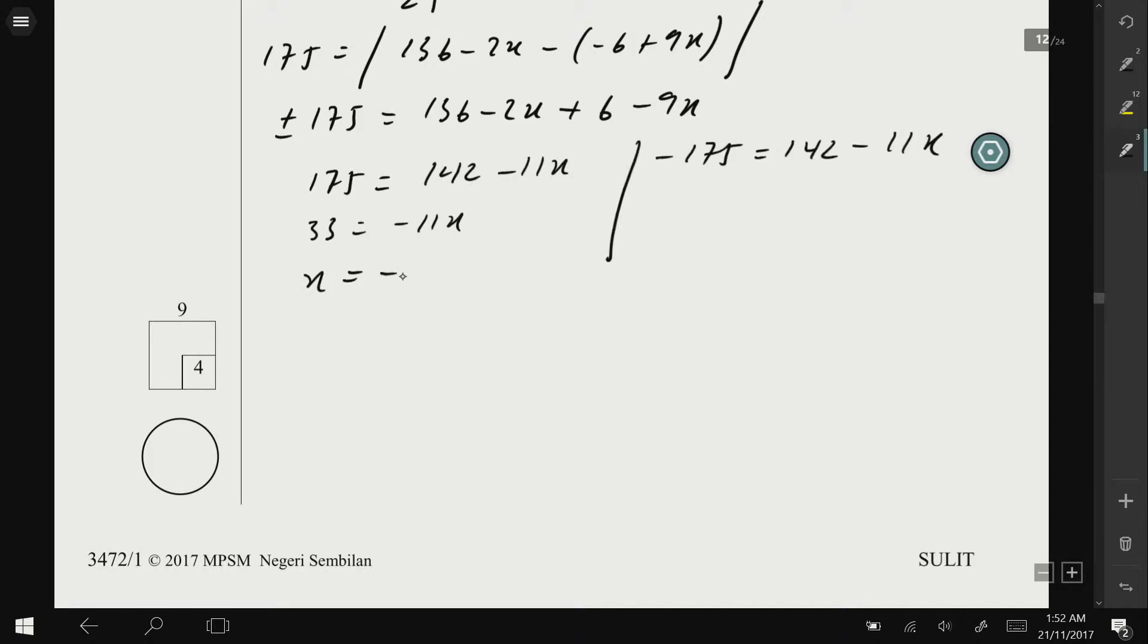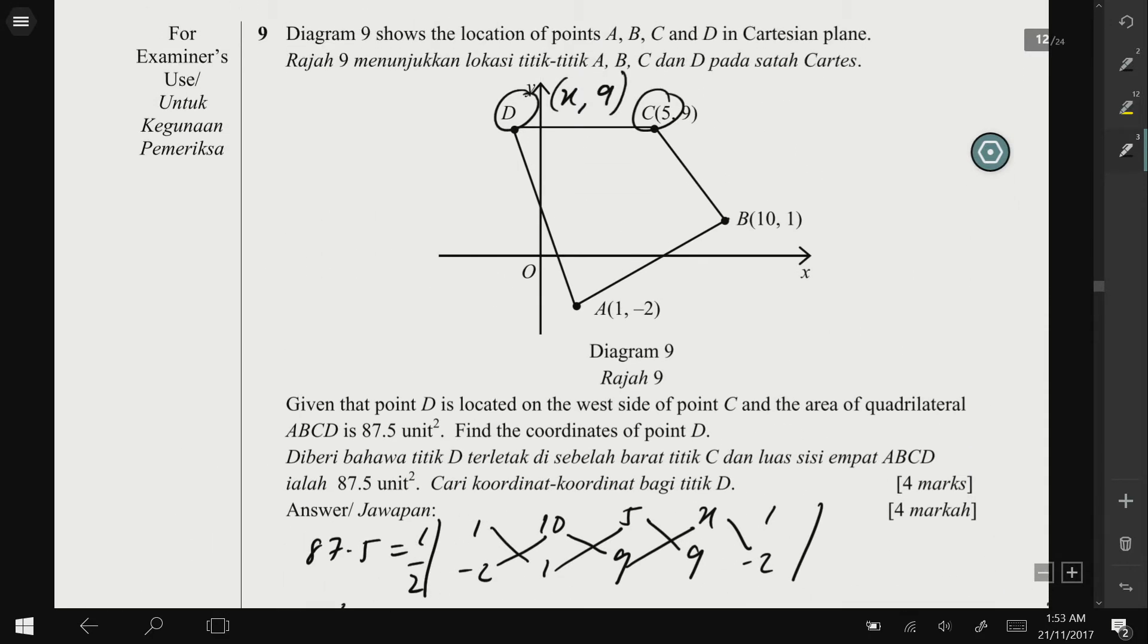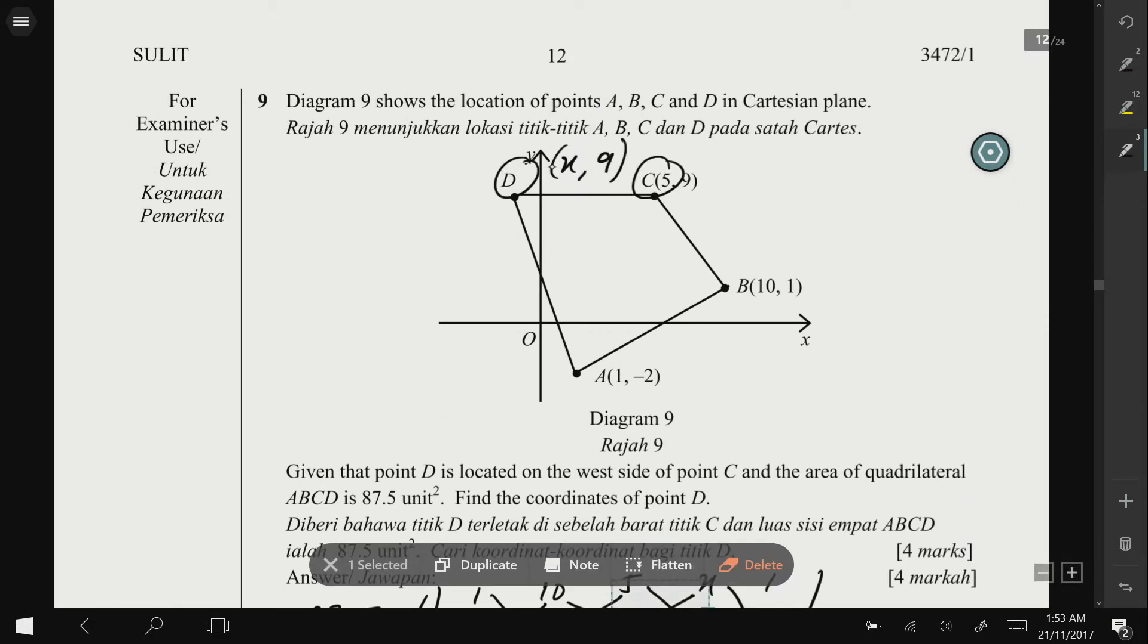So 11x = 175 - 142, so x = -3. The second part: -175 - 142 is -317 divided by -11x, so this x here is 28.818. So between these two equations, the correct answer will be x should be negative.